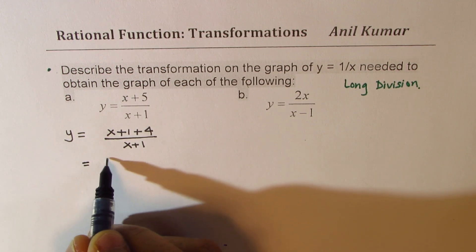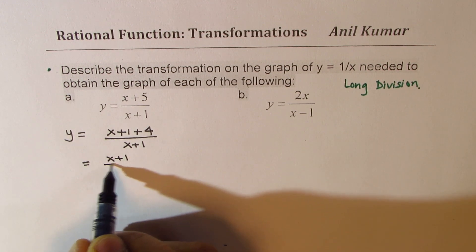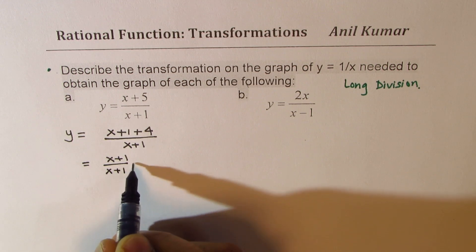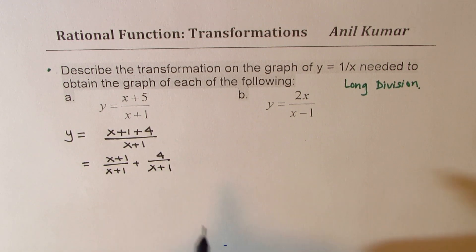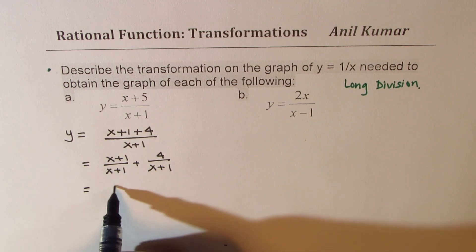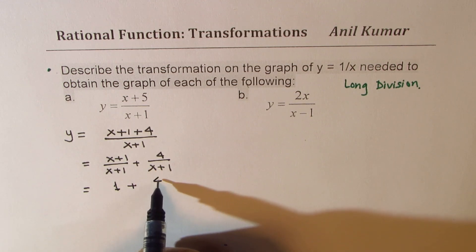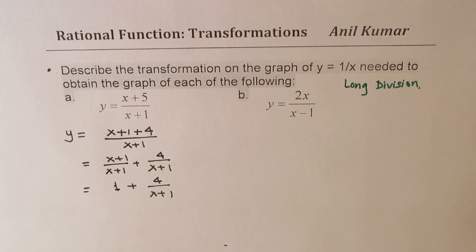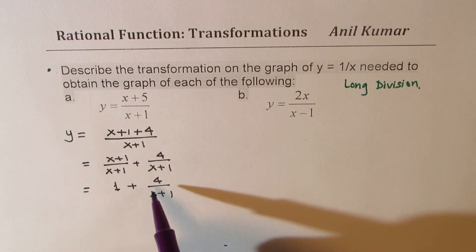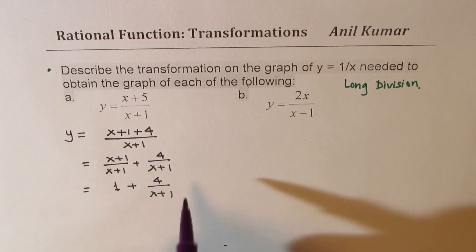When you divide by x plus 1, you could also write this as x plus 1 over x plus 1 plus 4 over x plus 1. Do you see that? And this gives you 1 plus 4 over x plus 1. Isn't that neat? That is how you should be doing it. Now it is very simple to describe the transformations.